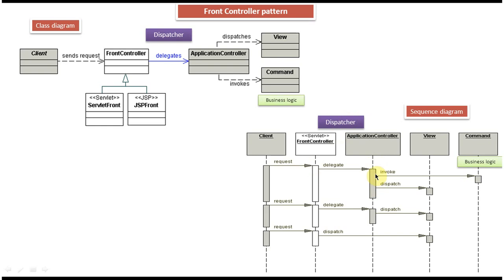The application controller, based on the request, invokes the business logic. The business logic in turn invokes the DAO layer, and the DAO layer in turn invokes the database to get the information corresponding to the request. It then passes that information back to the application controller, which dispatches the request to the view.